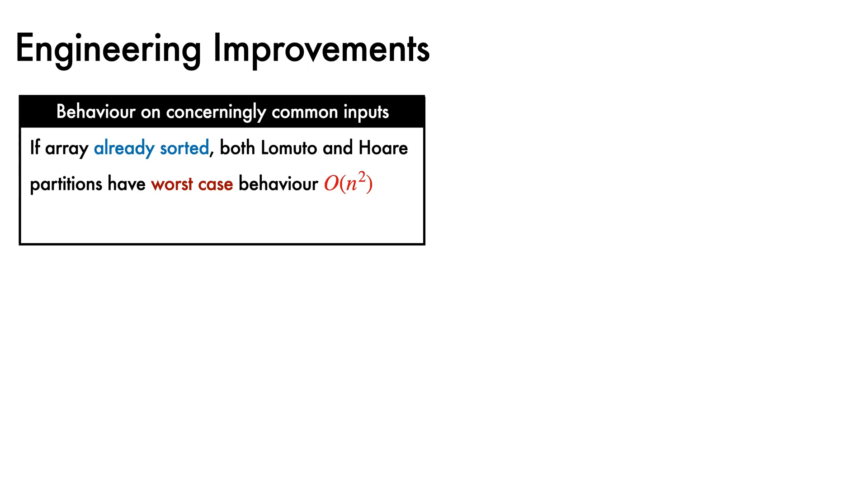When using the naive implementations we have described so far, both the Lomuto and Hoare partition functions will exhibit quadratic complexity on input data that is already sorted. Which is not great, given that this can arise frequently in practice.